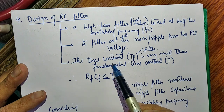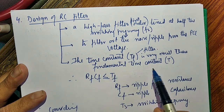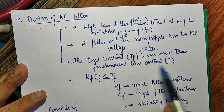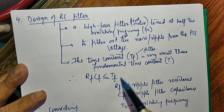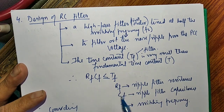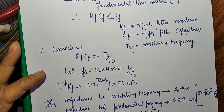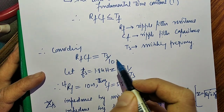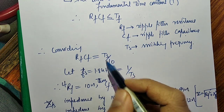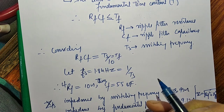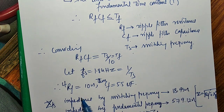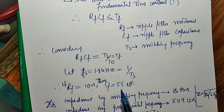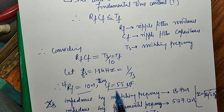The time constant of this filter must be very small compared to the fundamental time constant T. So R_F · C_F must be less than or equal to T_S divided by 10, because it should be much smaller than the fundamental period. Taking a switching frequency of 1.8 kHz, if we take R_F equal to 10 Ω, then C_F will be 5.5 µF. This is how R_F and C_F are calculated, tuned at half the switching frequency.